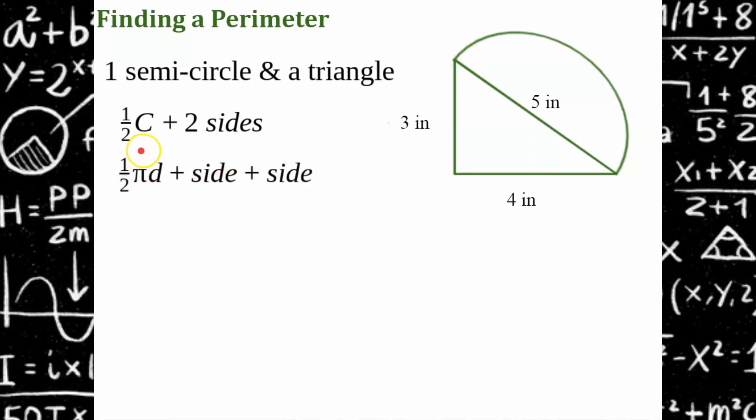Now that we have our plan, we know the diameter of the circle, so I'm going to use the formula pi times diameter. And remember we only need half because we have a semicircle. And then we're going to add side plus side. Remember you do not add the interior measurements in any of these composite figures if you're finding the perimeter.